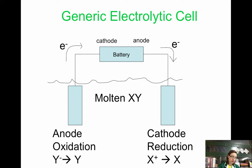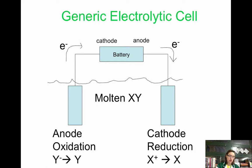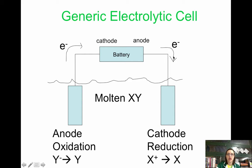You have two inert electrodes that are immersed into either a molten — which means melted — or into a solution. Electrolytic cells are in a single container, so we no longer have two separate containers. The battery acts as the electron pump — it's pulling electrons from the anode and putting them onto the cathode, pushing the electrons from one direction to another.